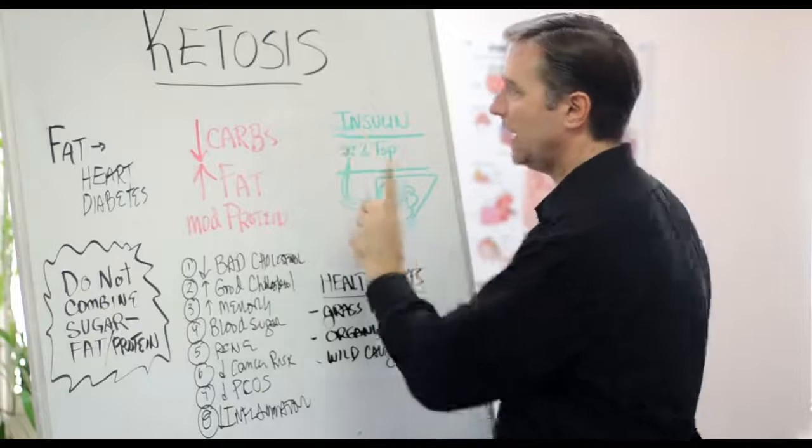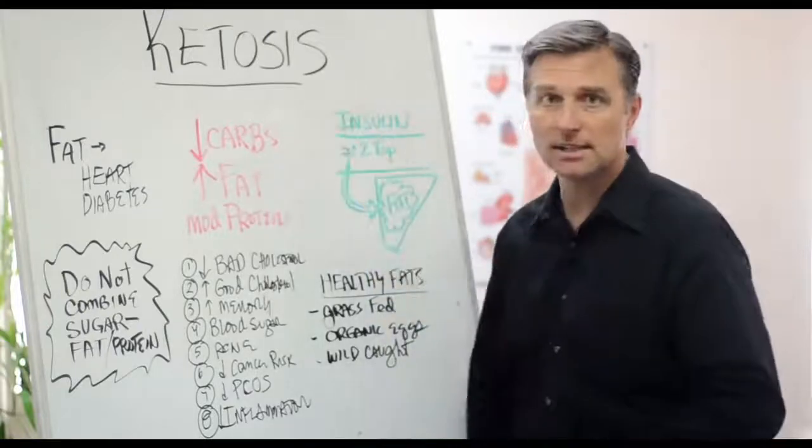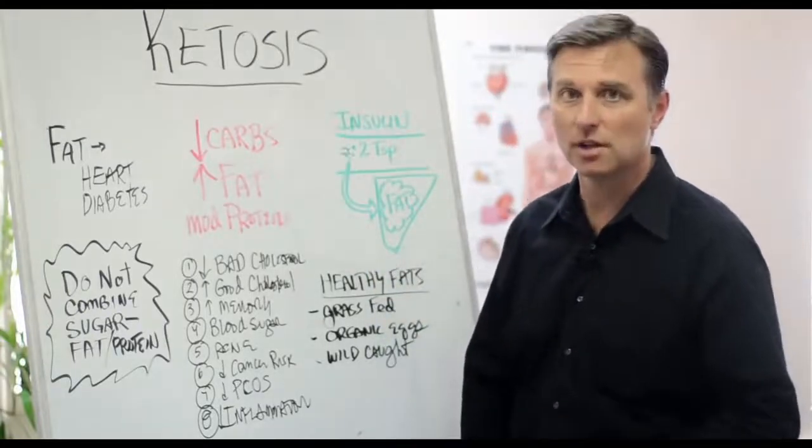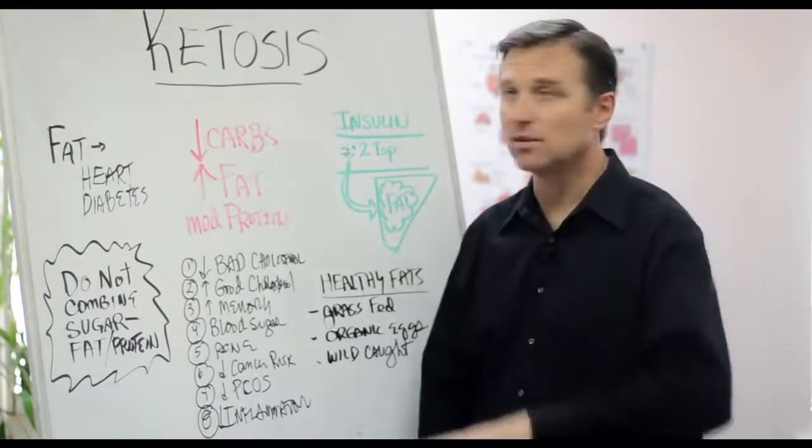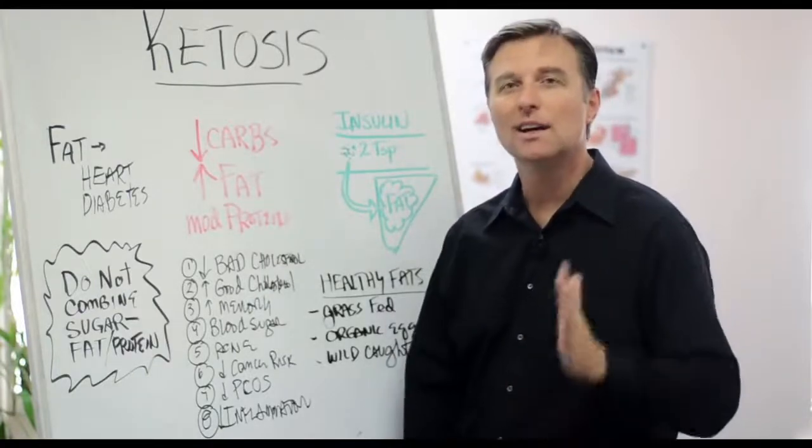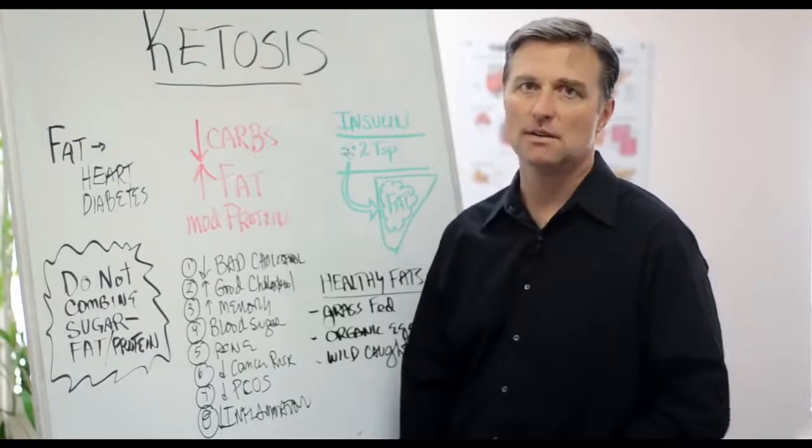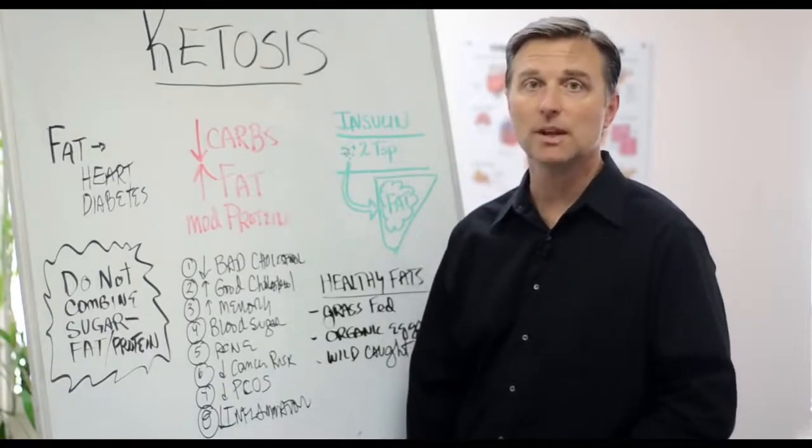Let me explain what insulin is though. Insulin is the hormone that regulates sugar. Normally in your blood, you only store in your entire body two little teaspoons of sugar. That's all you store, that's all you have in your blood.